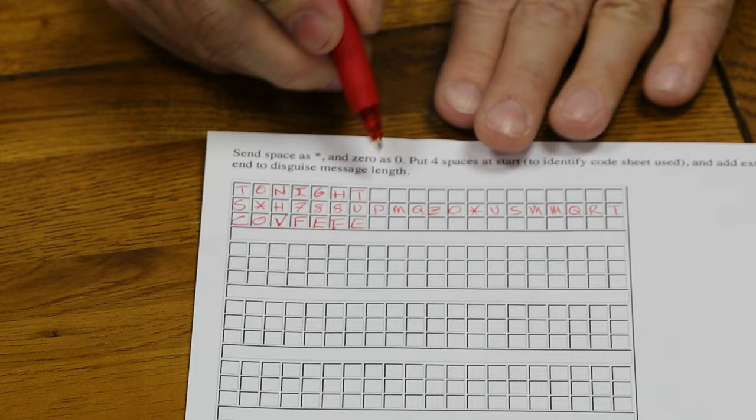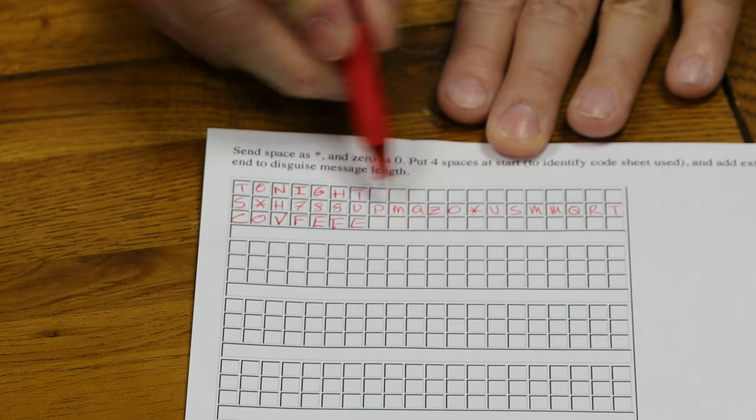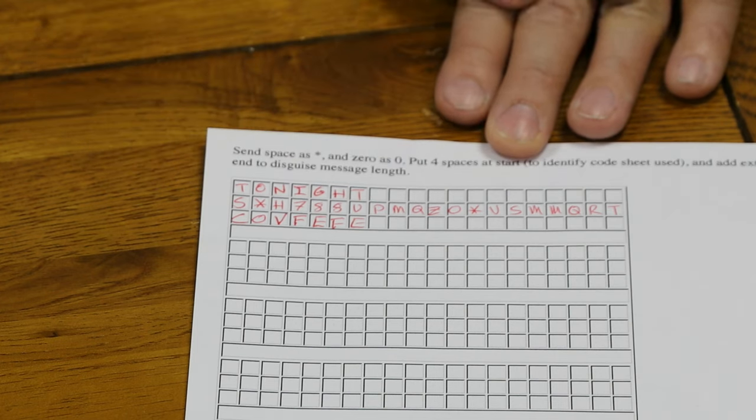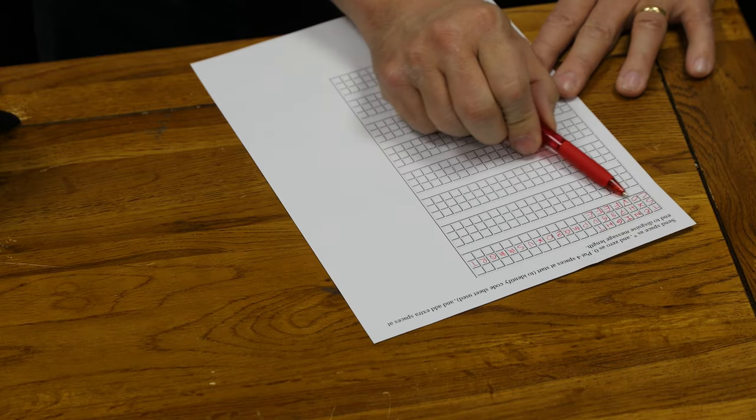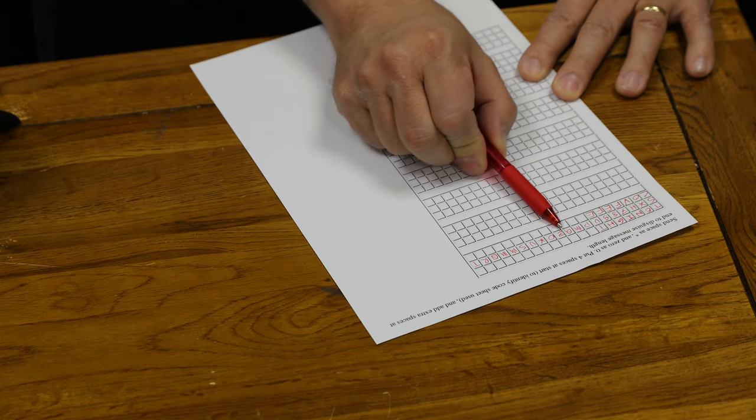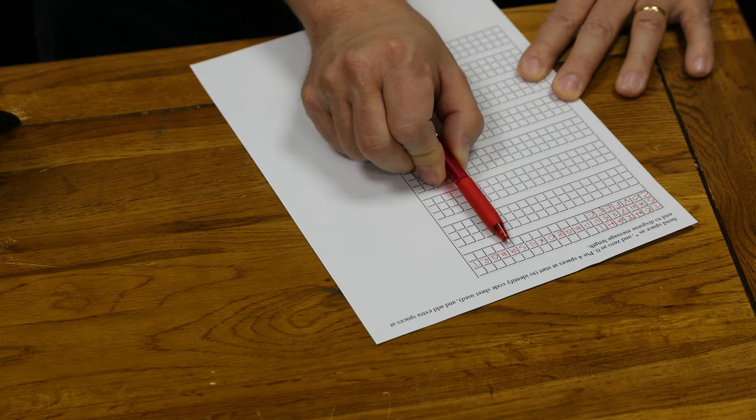And what you would normally do is you would actually continue. Now thankfully, adding spaces or stars gives you the same letters, so you just write these down as well. So you'd actually send a longer message than you're sending. Otherwise, the fact you're only sending seven letters is a clue as to what the message is. So you'd actually end up sending this string: C, O, V, F, E, F, E, P, M, Q, Z, O, star, U, S, M, M, Q, R, T. And that's what you'd send to the other person.